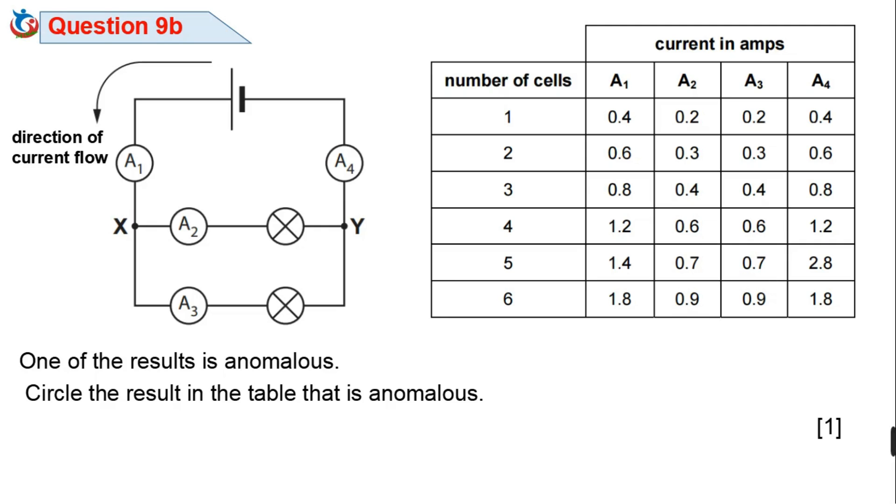And now A4, instead of reading the same result as A1 which is 1.4, we have 2.8 instead in the table of results. So this 2.8 is different from the normal or expected result. Hence, 2.8 is an anomalous result. Note, the question requires that you circle the anomalous result. So always follow the instructions. You go to the table of results and circle the anomalous result.